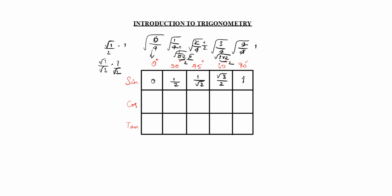Next, for cos, you reverse the sin values. So cos values for 0°, 30°, 45°, 60°, 90° are: 1, √3/2, 1/√2, 1/2, 0.